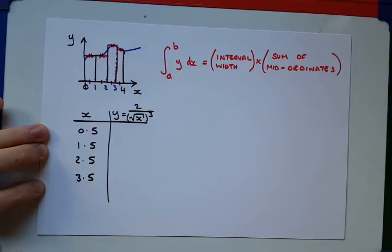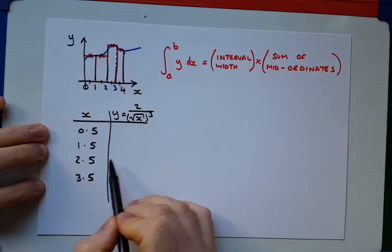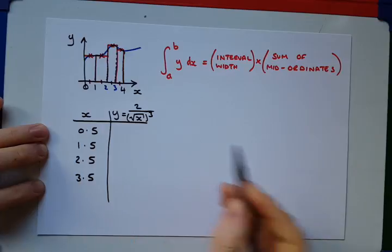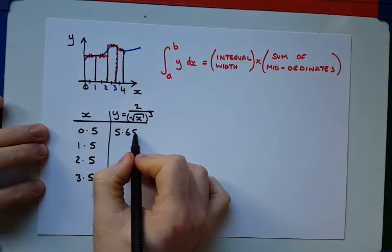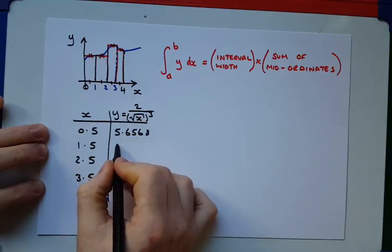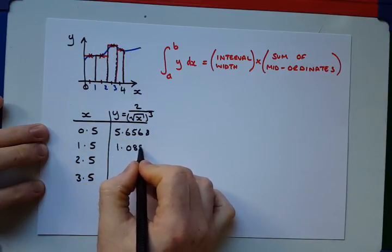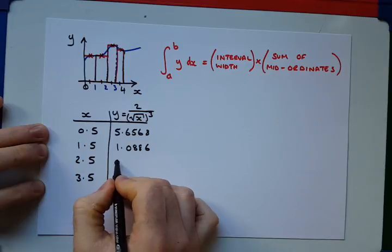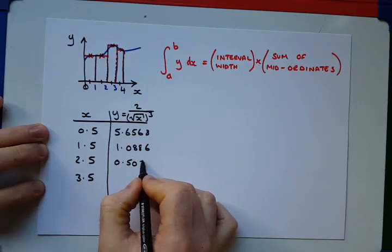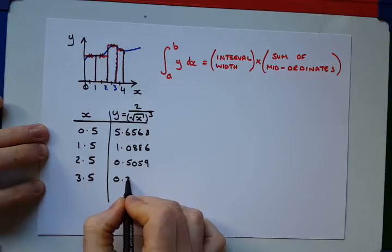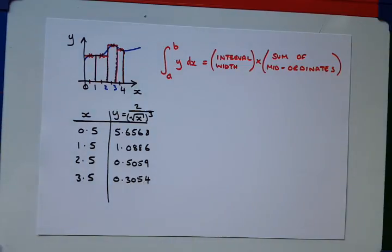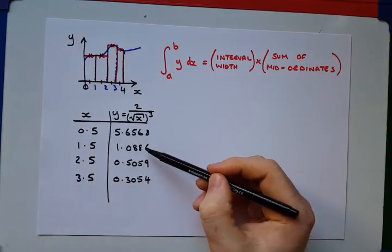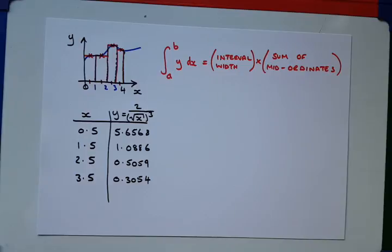And what we have to find here are the values of y at these associated points. So, I've calculated these already. All you have to do is pop them into your calculator. 5.658, 1.0886, 0.5059, 0.3054. Okay, so those are the values. You pop them into your calculator yourselves and just confirm them that these are the values of y at these mid-ordinate points.